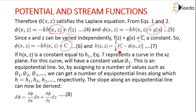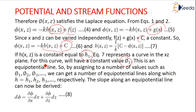Similarly, h of x comma z is nothing but 1 by k times c minus phi of x comma z, rearranging terms from equation 6. So h of x comma z equal to a constant h1 — this is equation 7 — represents a curve in the xz plane. For this curve we will have the constant value phi 1 with respect to h1. So this is an equipotential line.